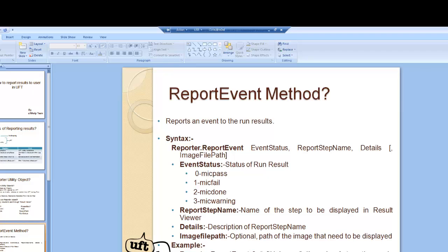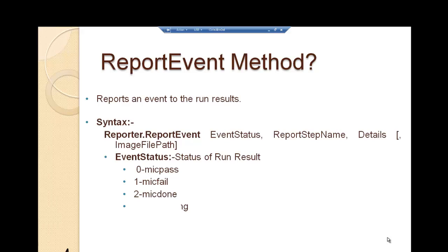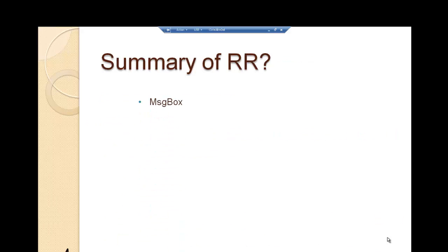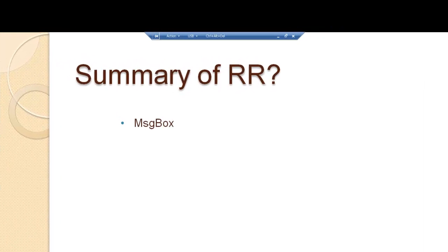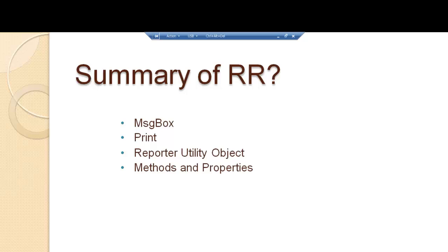Let's summarize what we did today. We worked with the message box, which displays results using a popup and allows us to control its title and the number of buttons. Then we worked with the print utility statement, where results are displayed in the output pane and can be copied afterward. The most important thing was the reporter utility object — we worked with its methods: the report event method and the report node method, with examples of both. We also worked with its properties: filter, report path, and run status.